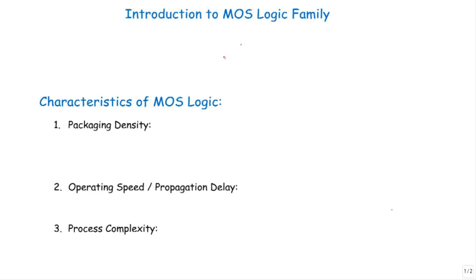In this video I will talk about MOS logic family and show some characteristics of MOS logic circuits. MOS logic family means logic circuits made of either P-type MOSFET or N-type MOSFET. Early generations of MOS logic circuits are based on a single type of MOSFET.